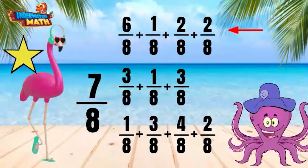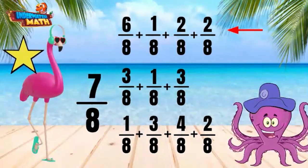Let's check the first one. 6 plus 1 is 7, plus 2 is 9, plus 2 equals 11. This expression has a sum of 11/8 and is incorrect.